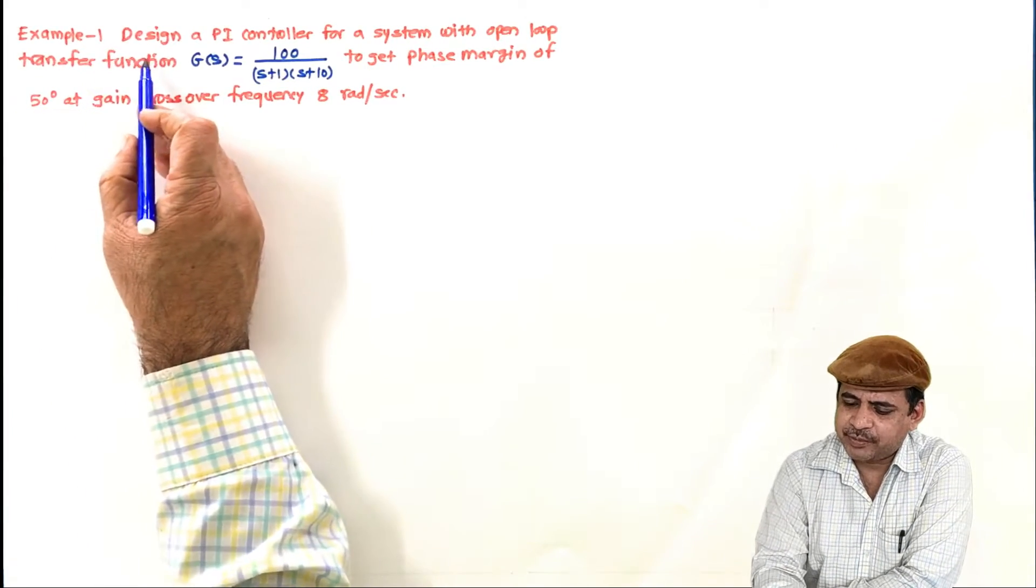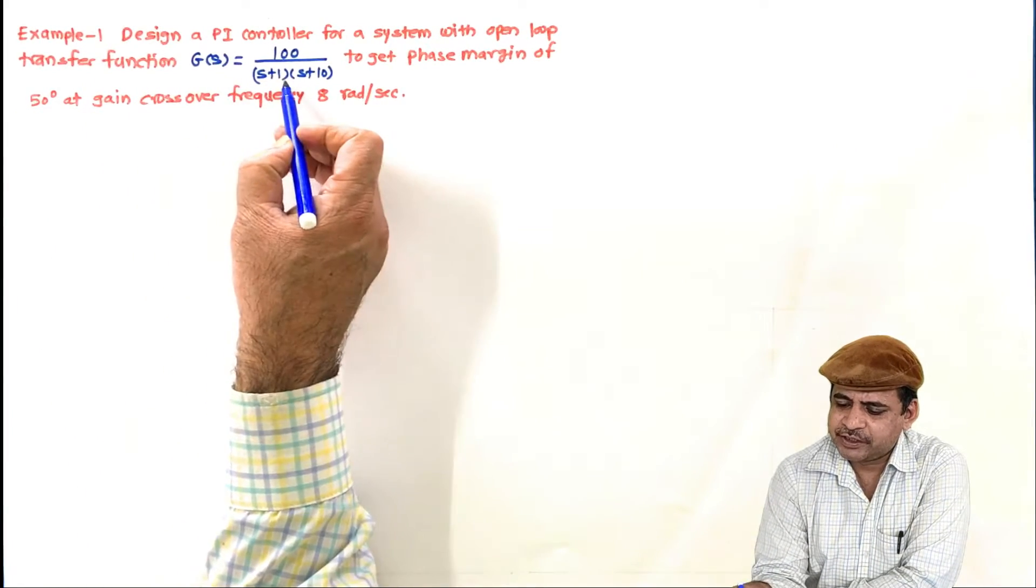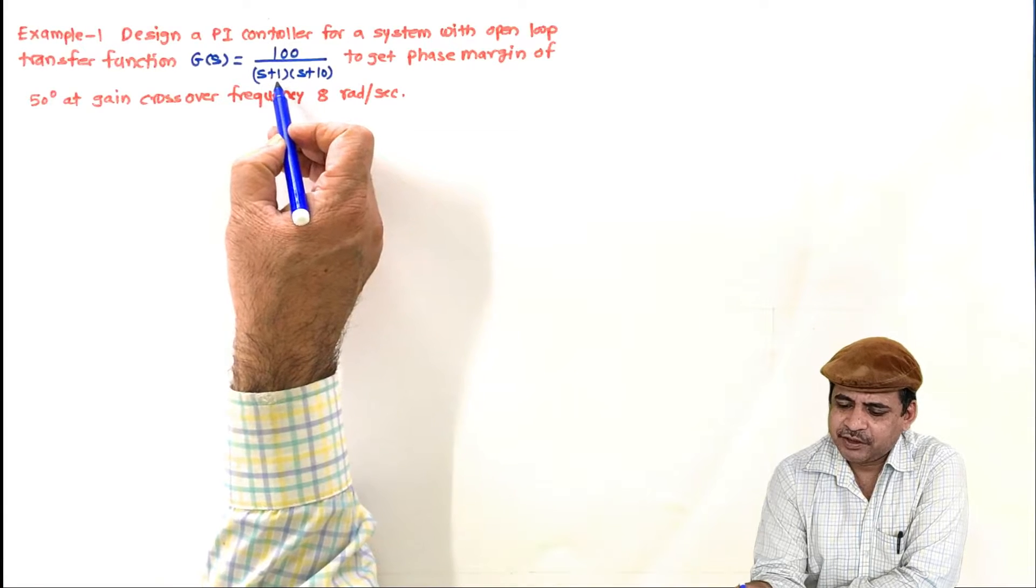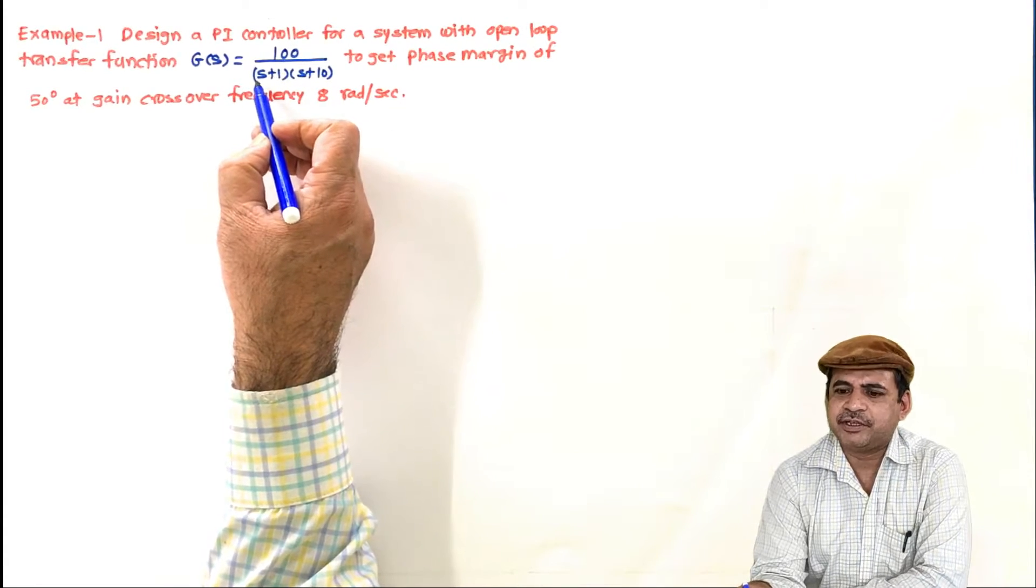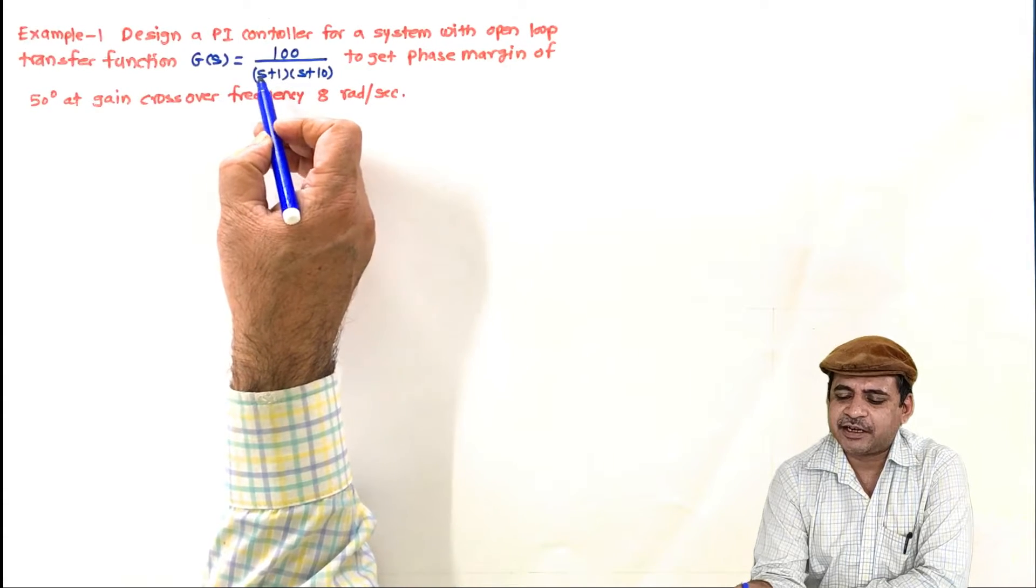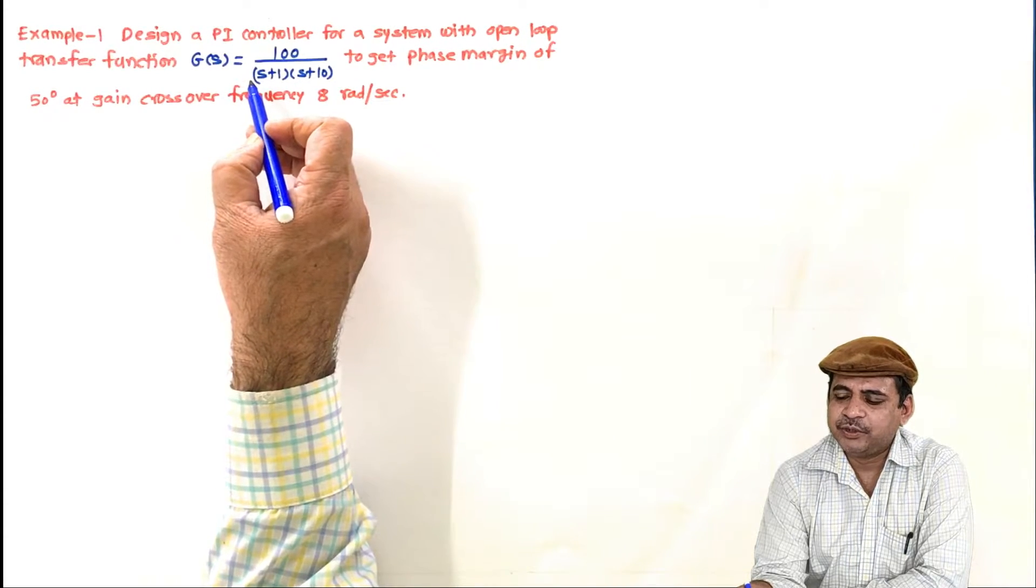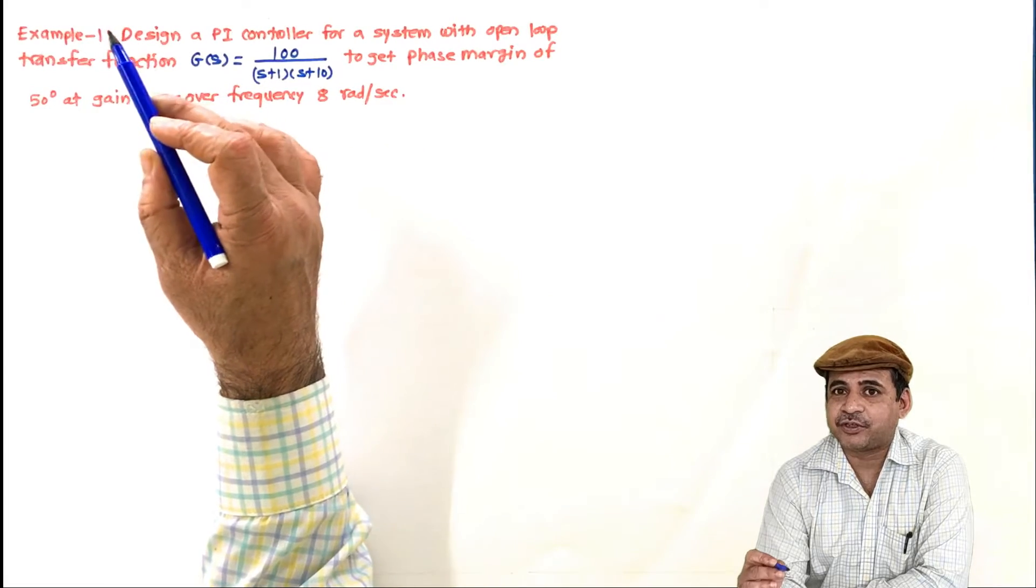In the given problem statement, for the given system, the system is a second-order system, but it is a type 0 system. It does not have any pole at origin and hence, integral action is required to eliminate the steady-state error for the step input.